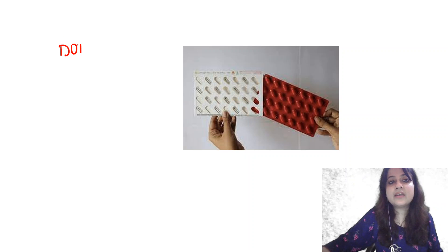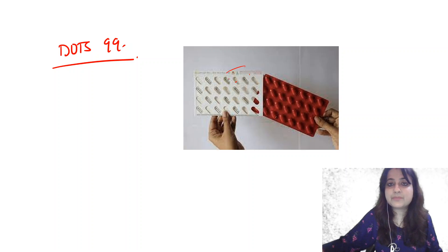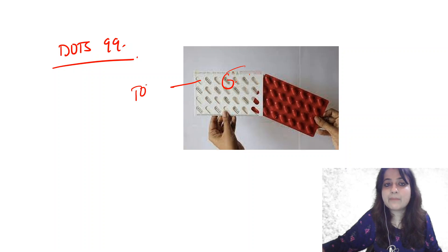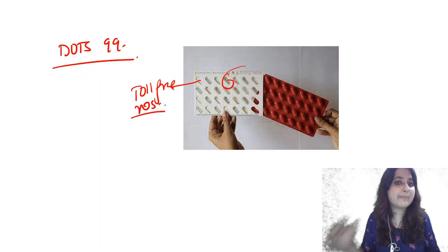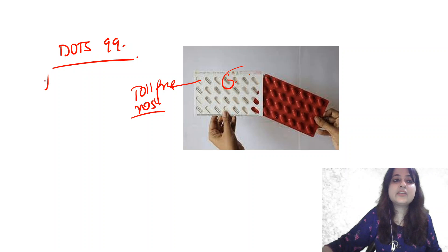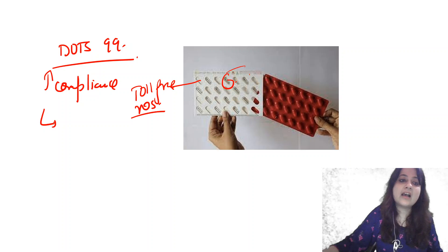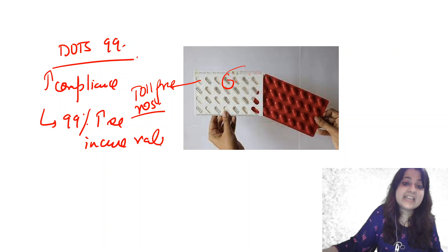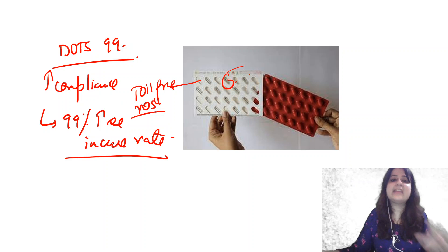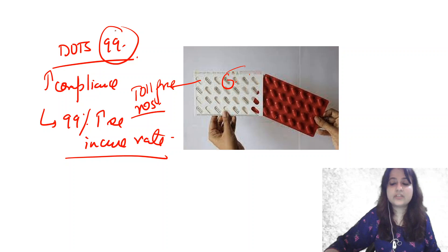The next item is DOTS 99. Inside the capsule packaging, there are toll-free numbers which the patient is supposed to call. This is going to increase the compliance rate, and by that we are targeting a 99% increase in cure rate. So if you are asked what '99' means in DOTS 99 — it stands for a 99% increase in cure rate.